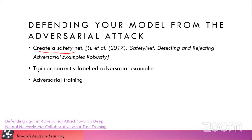The second defense is to train on correctly labeled adversarial examples. What we do is, suppose we get to know about an adversarial example for our network — we take it and we train the network on it.